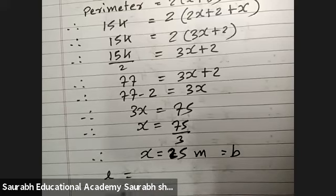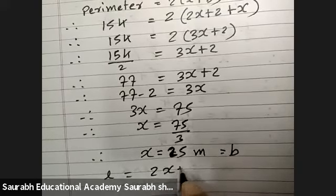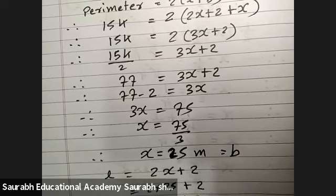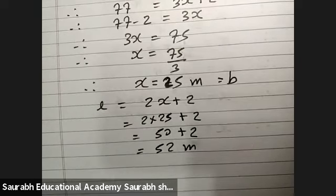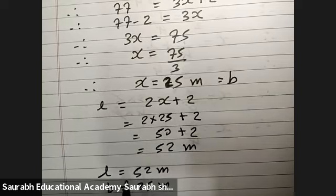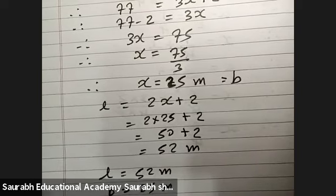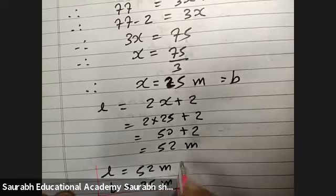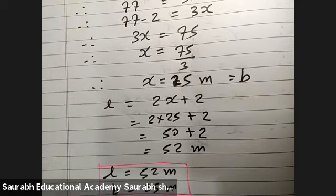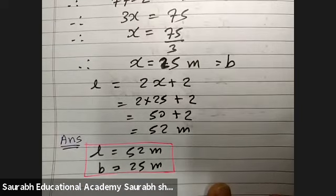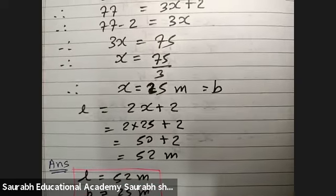Therefore, length equals 2x plus 2, 2 into 25 plus 2, 50 plus 2, 52 meters. So, what we can finally write? Length 52 meters, breadth 25 meters. These are called dimensions.